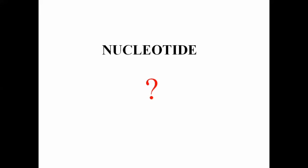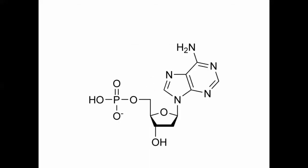In the FAD structure, what does the nucleotide consist of? Nucleotides have different functions. A nucleotide is composed of three things: a nitrogenous base, a sugar, and a phosphate. The nitrogenous base can be adenine, guanine, cytosine, and thymine in case of DNA, or uracil in case of RNA, depending on the need and function.